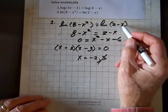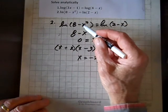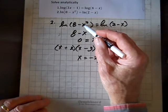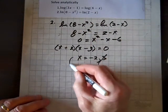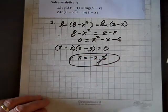And if we replace x with 3, notice we'd be taking the log of a negative number here. So we have to throw the 3 out. On the other hand, if we replace x with negative 2, a negative times a negative is positive. If we replace x with negative 2, we'll have, again, a positive. So that works. x equals negative 2.